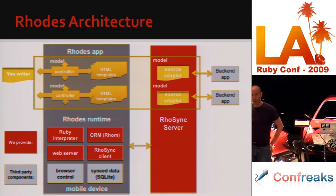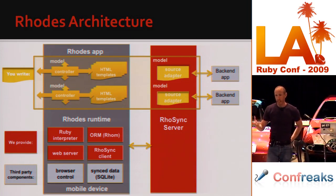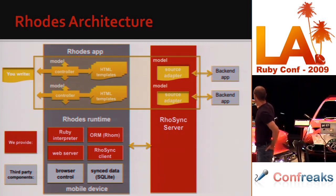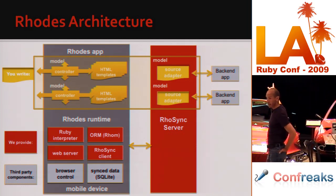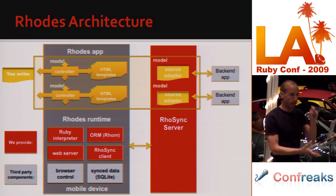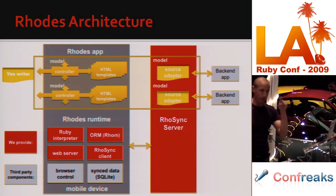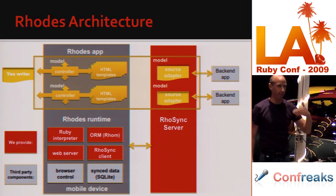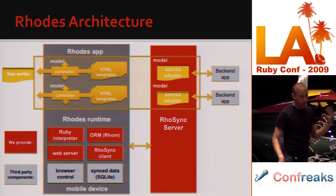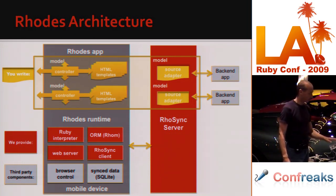You don't have to use sync data — we highly recommend it and for most enterprise apps you'll almost certainly want it, but some consumer apps just don't need it. If you're doing interaction with a back-end enterprise or SaaS app, you'll want to write a source adapter. We generate a skeleton for you and that source adapter is basically six methods: log in, query, create, update, delete, and log out. You put code in there — often just one line per method for something like SugarCRM.